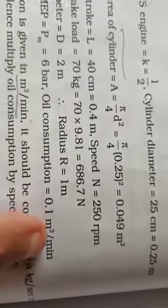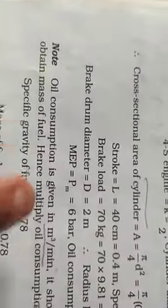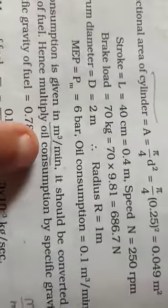Brake drum diameter 2 meters, so radius is 1 meter. Mean effective pressure 6 bar. Oil consumption 0.1 meter cube per minute. Oil consumption is given in meter cube per minute; it should be converted to kg per second to obtain mass of fuel.